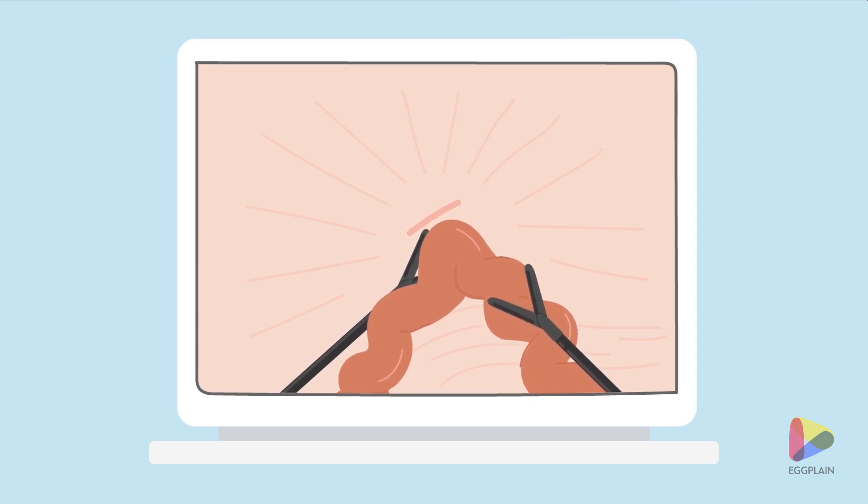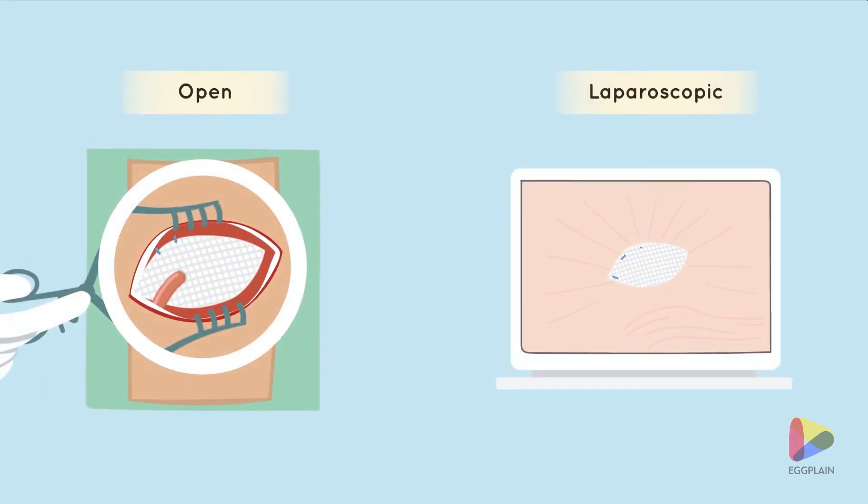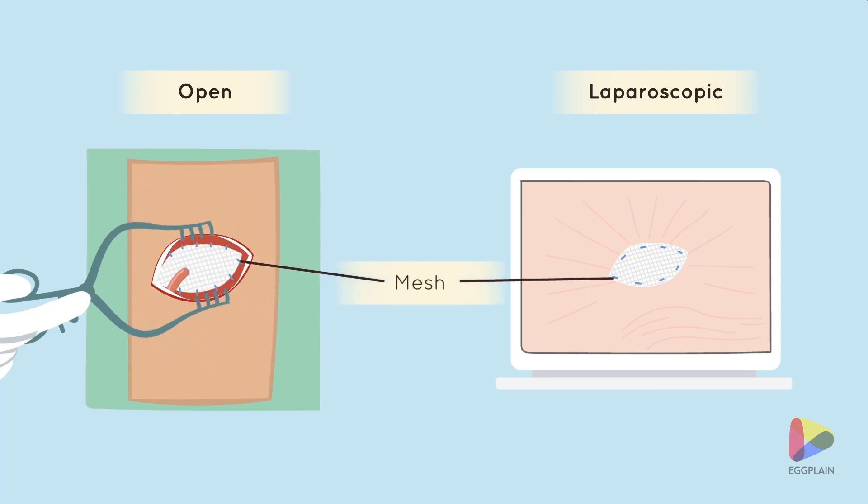In order to prevent a new inguinal hernia, the layers of the abdominal wall are then reinforced in both surgical procedures. In most cases, a durable synthetic mesh is used for this purpose.